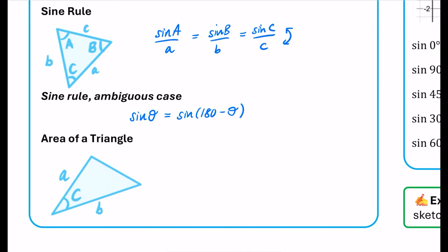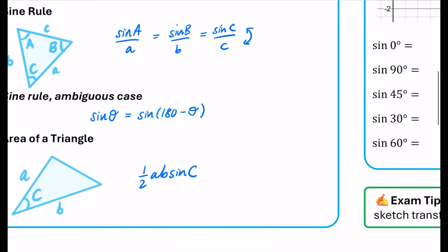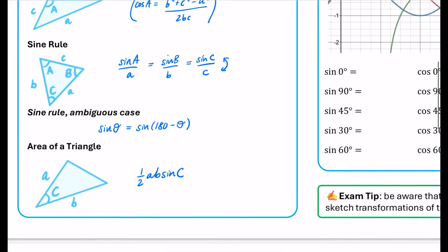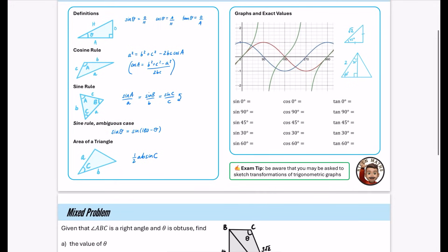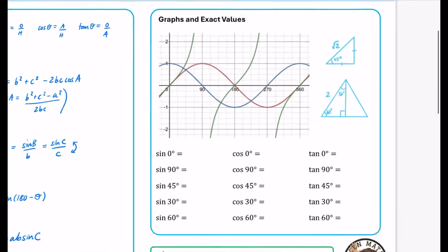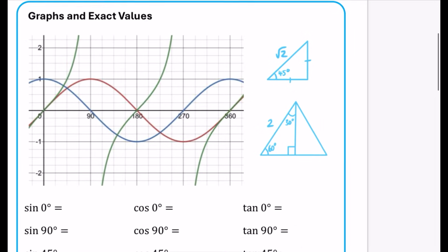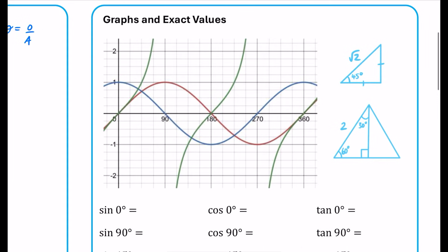We finish with the area of a triangle. Everybody knows this one: half ab sine C, where capital C is the angle between the two sides. Of course, if you can use base times height divided by 2, do that because it is more straightforward.